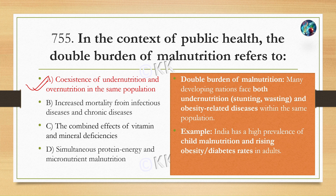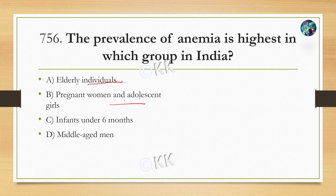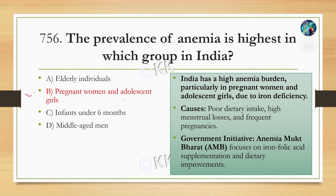The prevalence of anemia is highest in which group in India? Option A: Elderly individuals, Option B: Pregnant women and adolescent girls, Option C: Infants under six months, Option D: Middle-aged men. The correct answer is Option B, pregnant women and adolescent girls. India has a very high burden of anemia, particularly in these groups due to iron deficiency. Major causes include poor dietary intake of iron-rich foods, high menstrual losses, and frequent pregnancies. The government launched the ANEMIA MUKT BHARAT initiative to address this.